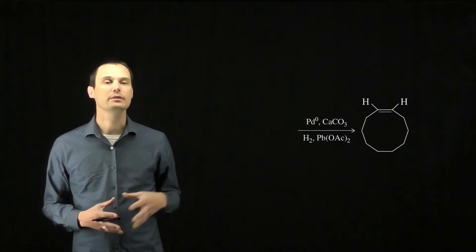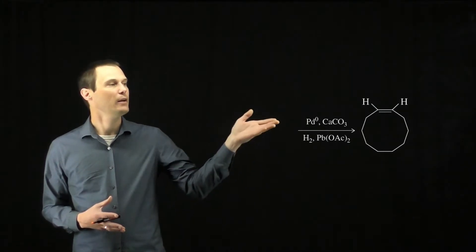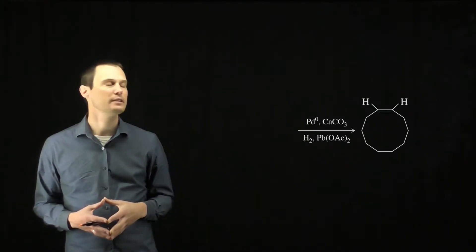Specifically, it turns alkynes into cis-alkenes. So our starting material will need to be an alkyne in the place of the current alkene.